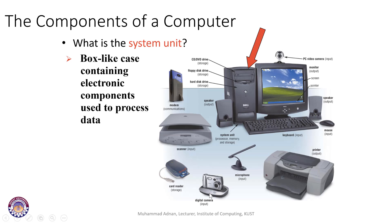The brain of a computer system — the main component — is called the system unit. It is a box-like case containing electronic components used to process data. The system unit contains the CPU (central processing unit), RAM, ROM, motherboard, modem, video card, audio card, graphics card, and other circuitry including the power supply.